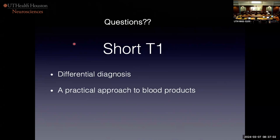The SAR — specific absorption rate — takes into account the patient's size, circumference, and shape. The radio frequency pulse is the main source of heating rather than the gradient reversals. We love our fast spin echo T2s, but think about those multiple 180s — that's an incredibly strong amount of radio frequency energy. We're getting around that now by changing the flip angle and using variable flip angle, so we're not depositing so much energy, since it's directly related to the strength of that RF pulse.